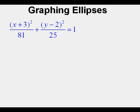Here's an equation of an ellipse with all the numbers filled in. The h is negative 3, so it's x + 3. The k is 2, so it's y - 2. The a² is 81, and the b² is 25.